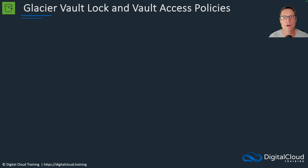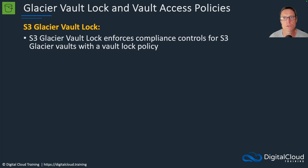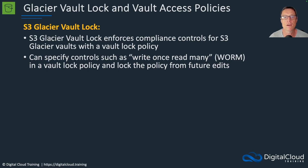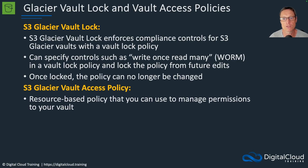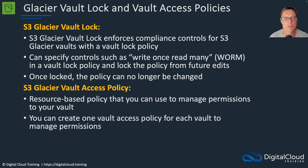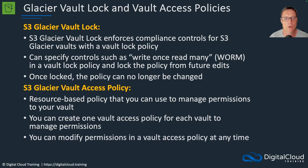In S3, we have Glacier for long-term archival and storage at low cost. There are two features called Vault Lock and Vault Access Policies. Vault Lock enforces compliance controls for S3 Glacier vaults with a lock policy — you can specify write once, read many, meaning the files cannot be changed or edited. Once locked, the policy cannot be changed. The Vault Access Policy defines who is allowed to access the vault. You can create one Vault Access Policy per vault to manage permissions, and you can modify permissions in a Vault Access Policy at any time.